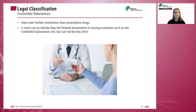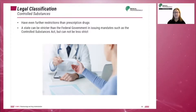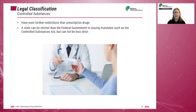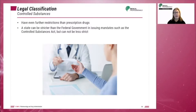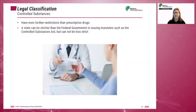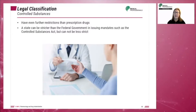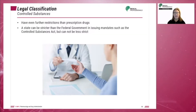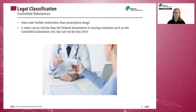Examples of controlled substances include narcotic pain relievers, sedatives, hypnotic drugs, anti-anxiety drugs, and stimulant medications. Regardless of the classification, drug dosage should be carefully followed because of toxic side effects if they are misused or used in combination with other drugs.